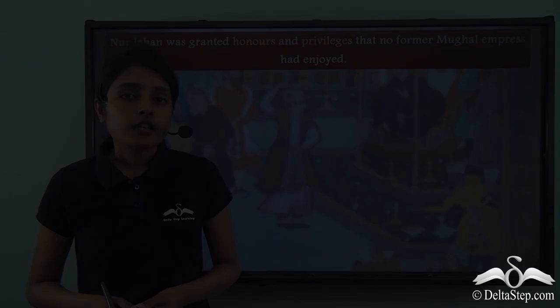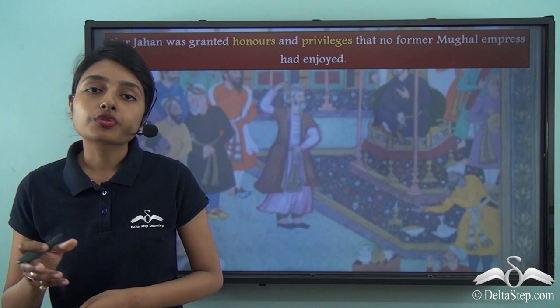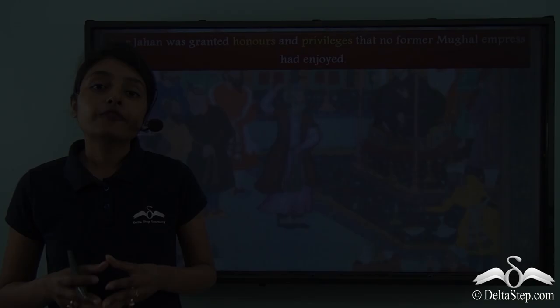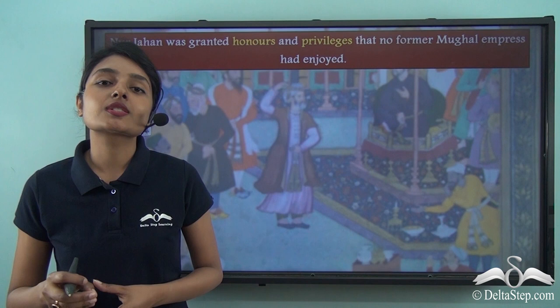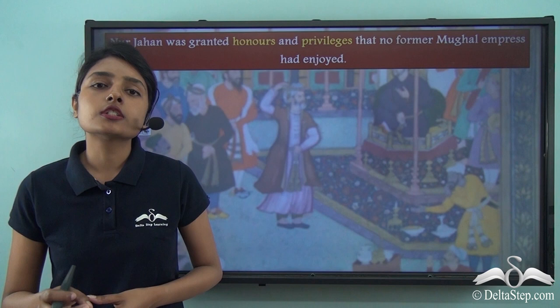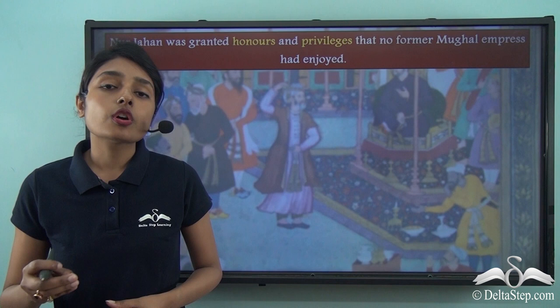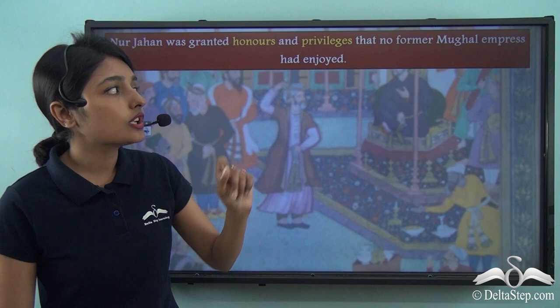Throughout the Mughal Empire's history, it was males who held power and authority — after Babur came his son Humayun, followed by Akbar, then Jahangir. Women more often than not did not enjoy political power. Nur Jahan, however, was a very capable and educated woman who became the joint ruler of the Mughal Empire — an unprecedented development. She was granted honors and privileges that no former Mughal empress had ever enjoyed.